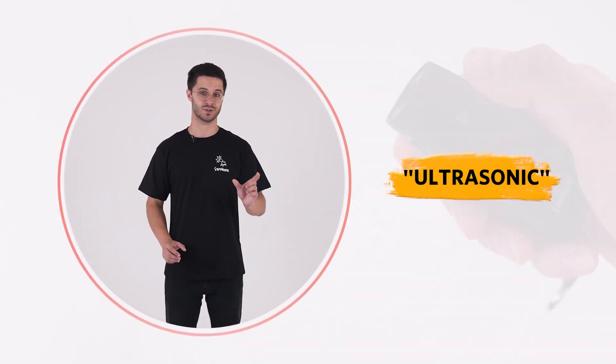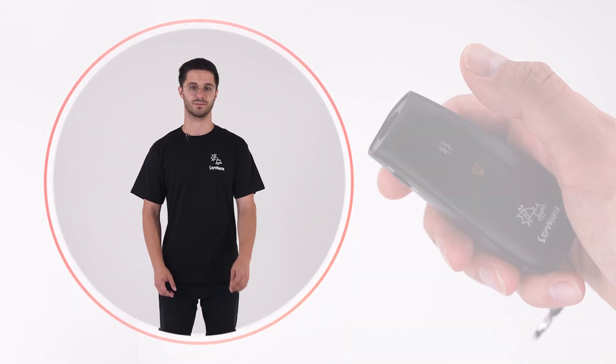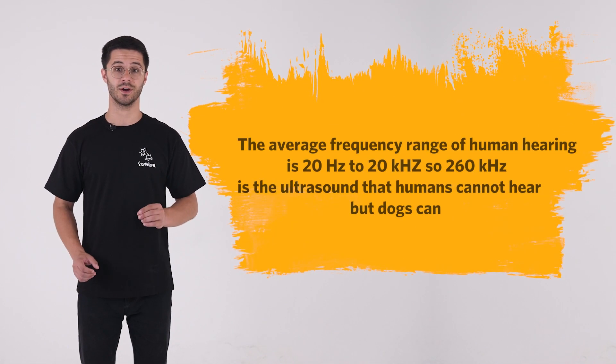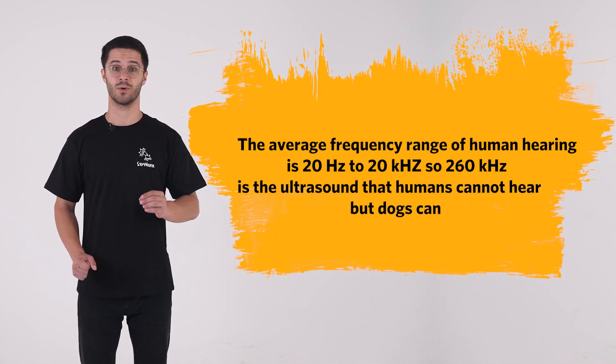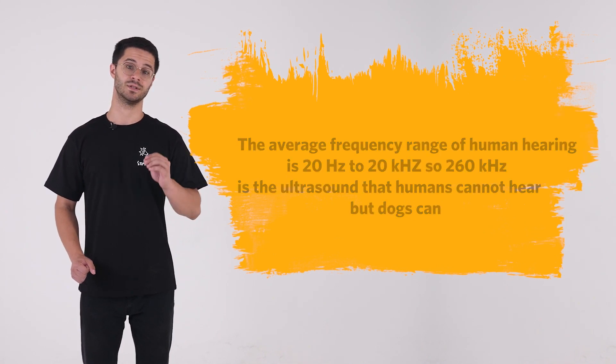Important: The average frequency range of human hearing is 20 hertz to 20 kilohertz, so 25 to 65 kilohertz is the ultrasound that humans cannot hear but dogs can.